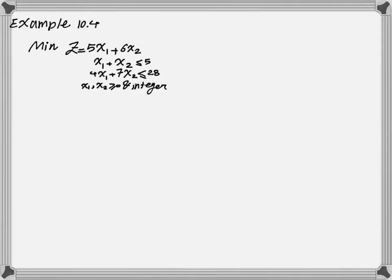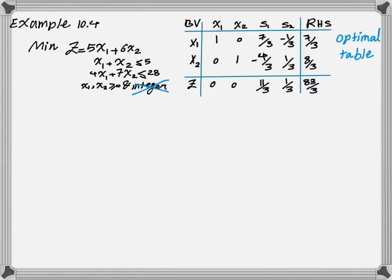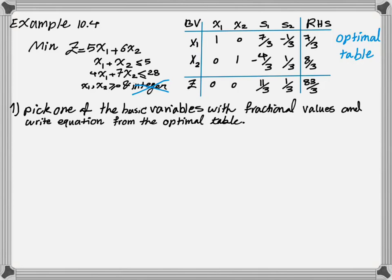So to get started, let's take a look at example 10.4. As I mentioned, we first relax the assumption of integer variables and solve this problem using the regular simplex method. This is the optimal table that we reach. If you are not familiar with the simplex method, please go back and watch the video on how to solve a linear programming problem using the simplex method before moving on. To apply the cutting plane method, we first find variables that are not integer in the right-hand side, then pick one basic variable with a fractional value and write the equation from the optimal table.